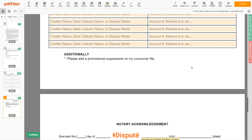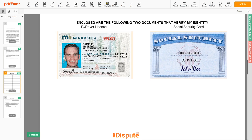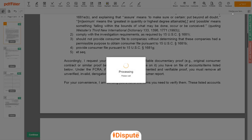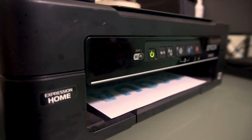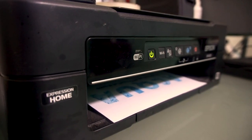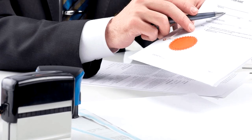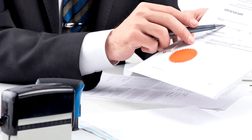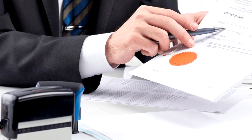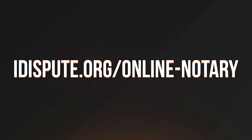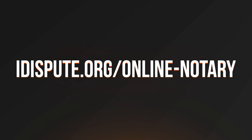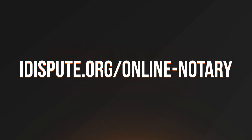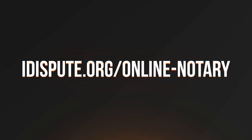Good job, your document is ready. Check your personal information one more time and click the Buy button. Proceed with the payment to download and print the document from your computer. Before the final step, you need to notarize your document. Be sure to keep the original copy of the letter for your records. For your convenience, please use the online notary service by following the link idispute.org/online-notary.